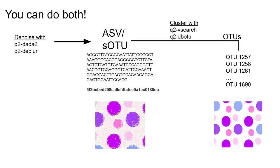You can denoise and cluster your data. The advantage of this approach is that we can still use our denoising tools, which have far superior quality control methods, to produce the highest possible resolution of our data, and then cluster our features down to whatever similarity threshold we want. You can always just use traditional OTU clustering methods without denoising first, and if you have old data types without quality scores, this may be your only option. But in general, we advise starting with the denoisers, and then the choice of clustering or not clustering should be strictly driven by your biological question — this should be a user-driven choice.